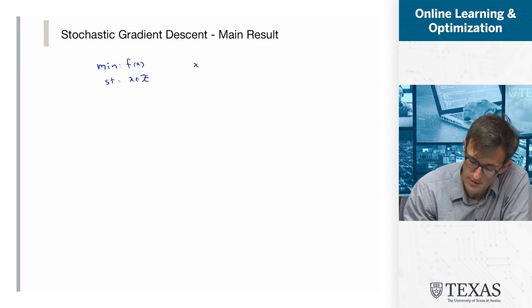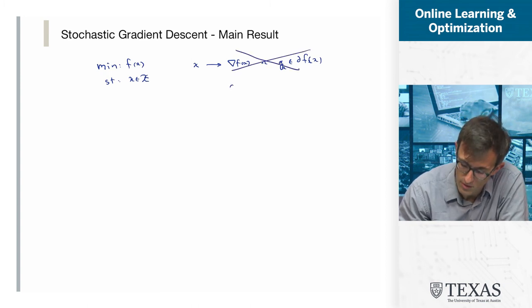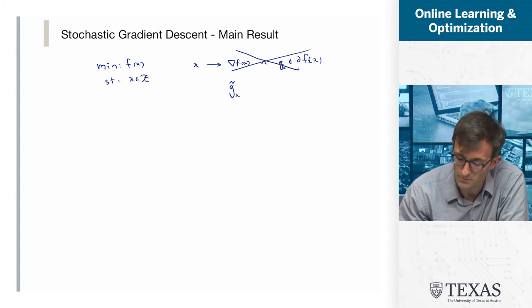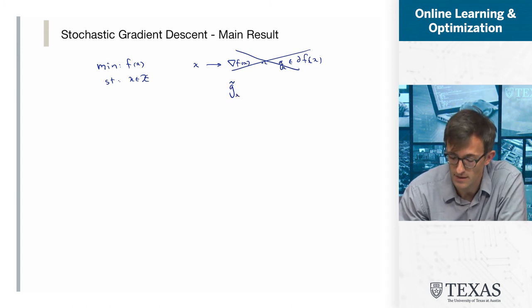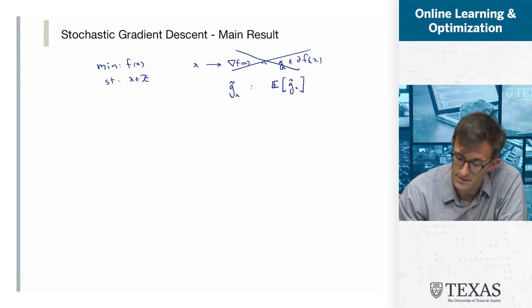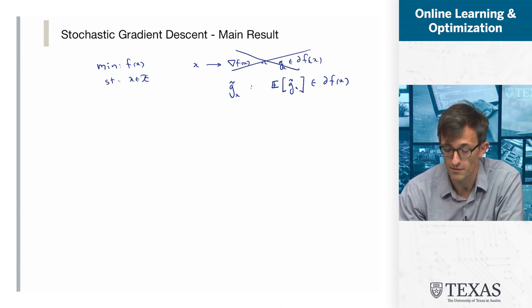Instead of using the gradient of f of x or an element of the sub-differential of f at x, we're going to use something which I denote as g̃ to remind us that it's a random variable. The key property is that the expected value of g̃(x) is, in fact, an element of the sub-differential. If our function is differentiable, that means the expectation of g̃ must equal the gradient of the function at that point.